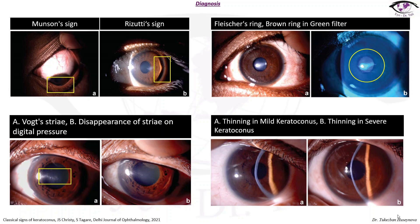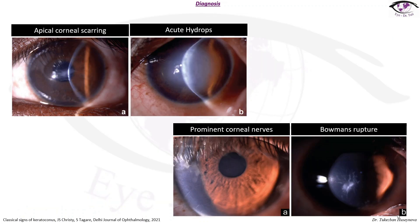Thinning in mild keratoconus and thinning in severe keratoconus can be seen here. In the next slide we can see apical corneal scarring and acute hydrops. On the image below we can see prominent corneal nerves and also Bowman's rupture.